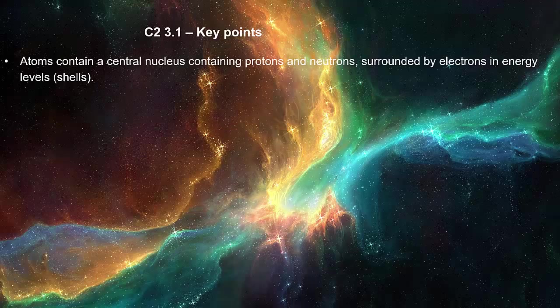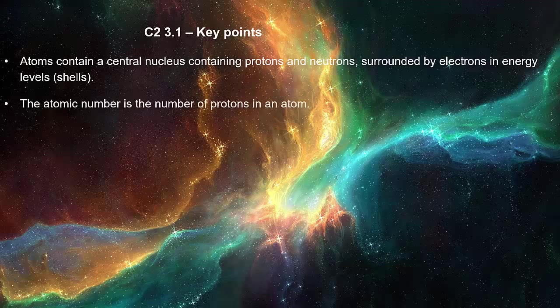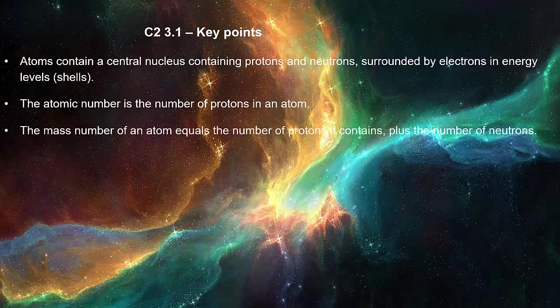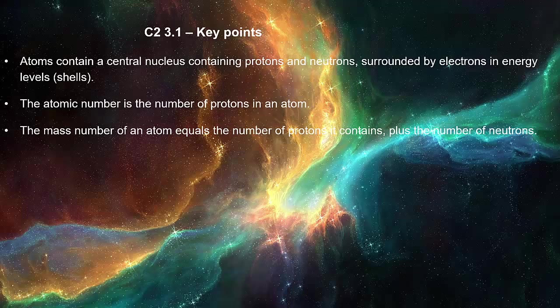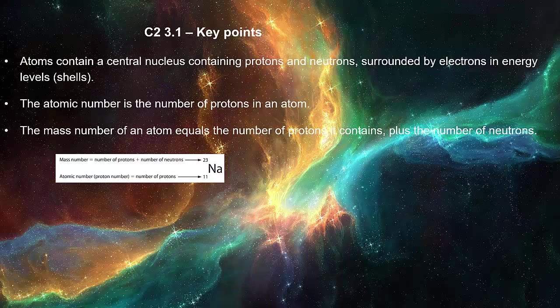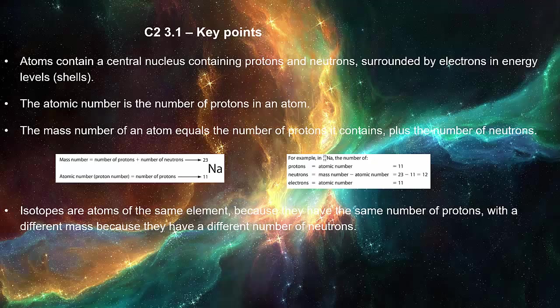Atoms contain a central nucleus containing protons and neutrons surrounded by electrons in energy levels. The atomic number is the number of protons in an atom. The mass number of an atom equals the number of protons it contains plus the number of neutrons. Isotopes are atoms of the same element because they have the same number of protons with a different mass because they have a different number of neutrons.